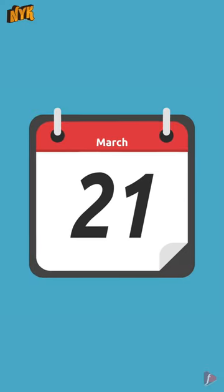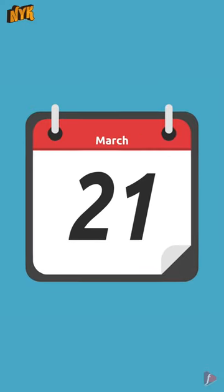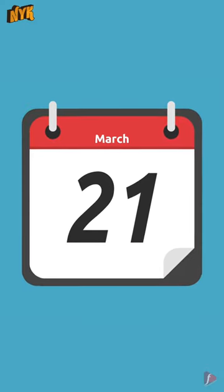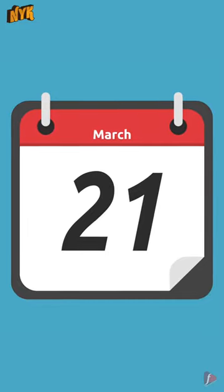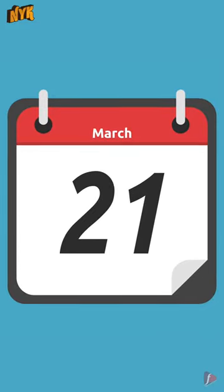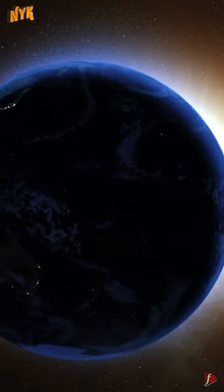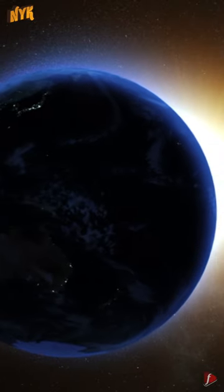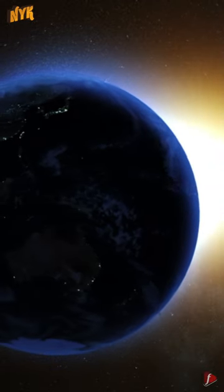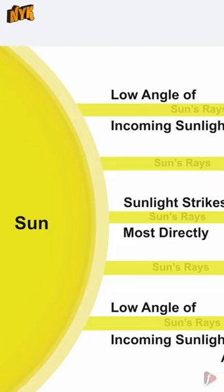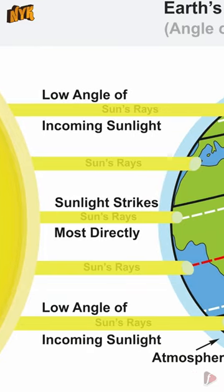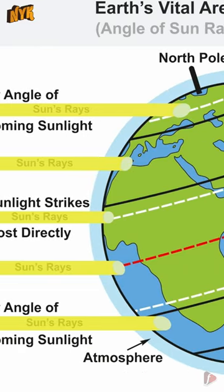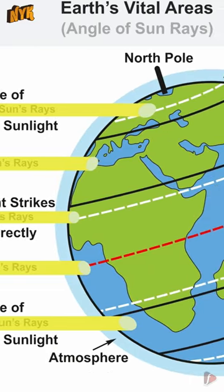March equinox, also known as spring or vernal equinox, occurs around the 20th–21st of March every year. The date is not fixed due to the elliptical orbit of the Sun. Sun rays sometimes fall on the Tropic of Cancer and sometimes on the Tropic of Capricorn.